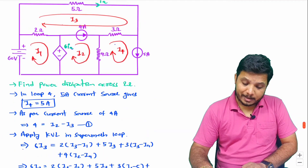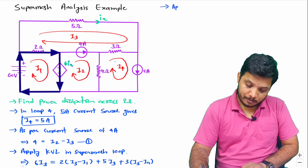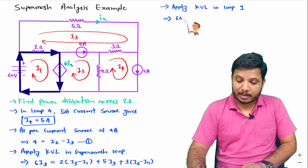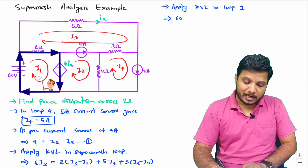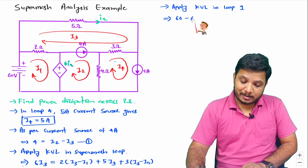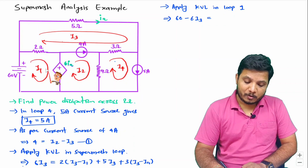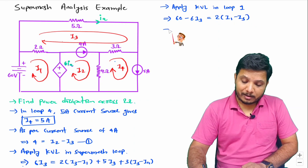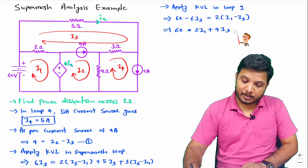Now we have two equations and we can have one more, giving three equations and three unknowns. Applying KVL in loop 1: the 60V source is happening from minus to plus, so write plus 60. Then the 6·Ia voltage source — where Ia is I3 — is happening from plus to minus in this loop, so minus 6·I3. That equals 2·(I1 minus I3) for the 2-ohm resistance. Simplifying: 60 equals 2·I1 plus 6·I3 minus 2·I3, which gives 60 equals 2·I1 plus 4·I3. This is equation 3.